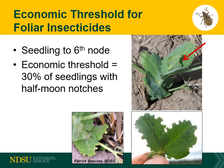Calculate an average for the notching, which is used to determine if you need a foliar insecticide application. The economic threshold is reached when 30% of the plants have half-moon shaped feeding notches on the clam leaves. For successful foliar insecticide control, the insecticide should be applied before the female weevil has had the opportunity to lay eggs, to prevent yield loss caused by larvae feeding on the root nodules.